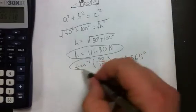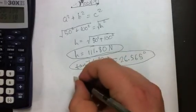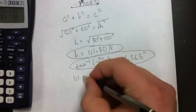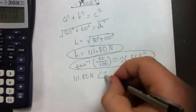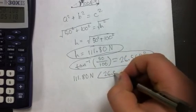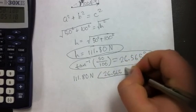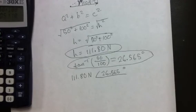Okay, so this is the two components of our answer, and how I want you to write them is just like this. That's 111.80 newtons at an angle of 26.565 degrees. And that concludes this problem.